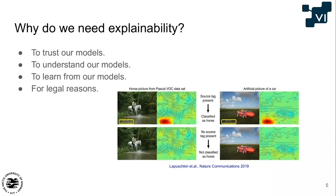Here's a famous example from the machine learning literature, where a machine learning system was tasked with classifying images. One of the classes was horses. But the system discovered that all the horse images were taken by the same photographer, so instead of identifying the horse, it found the photographer tag in the bottom left corner. If you remove the tag, the model could no longer recognize horses. And if you insert the tag into an image of something else, the model would classify it as a horse. You can imagine these effects happening with medical images, where hospitals might have a tag for a specific ward. Having explainability allows us to see effects like this when the model is not behaving as we expect.